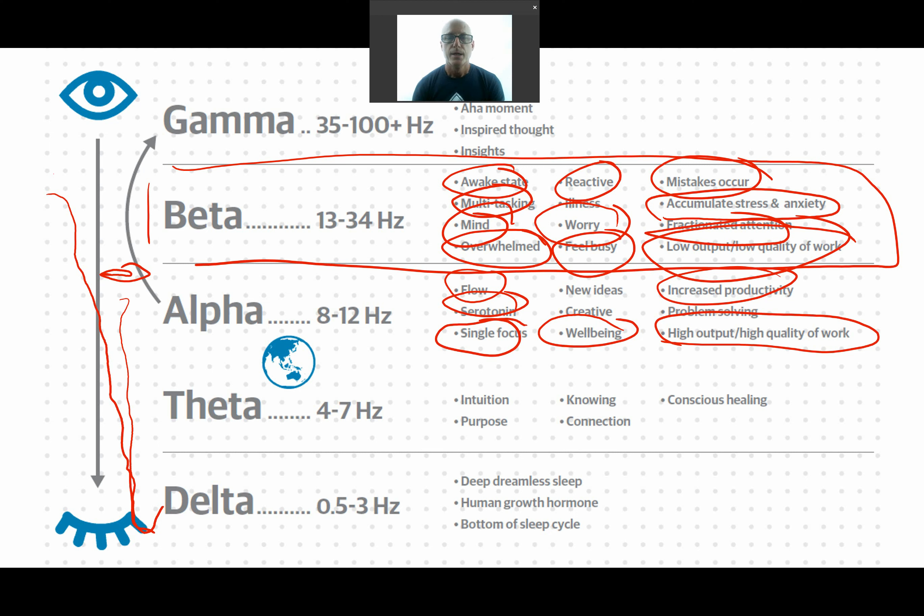When we have high density of gamma in our brains, it can be linked to higher states of consciousness as well. That's a conversation for another day. It's really powerful.